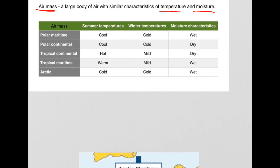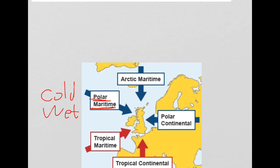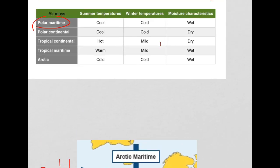Let's deal with polar maritime first of all. Polar means cold and maritime means wet. It comes from the north-west direction towards the UK. A polar maritime air mass gives us cool temperatures in summer, cold temperatures in winter, and wet characteristics throughout the year.